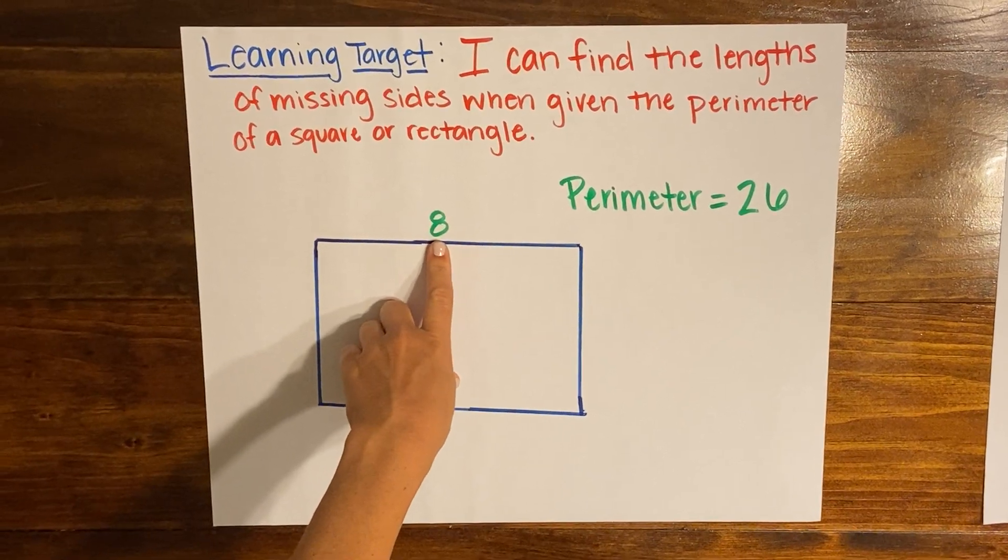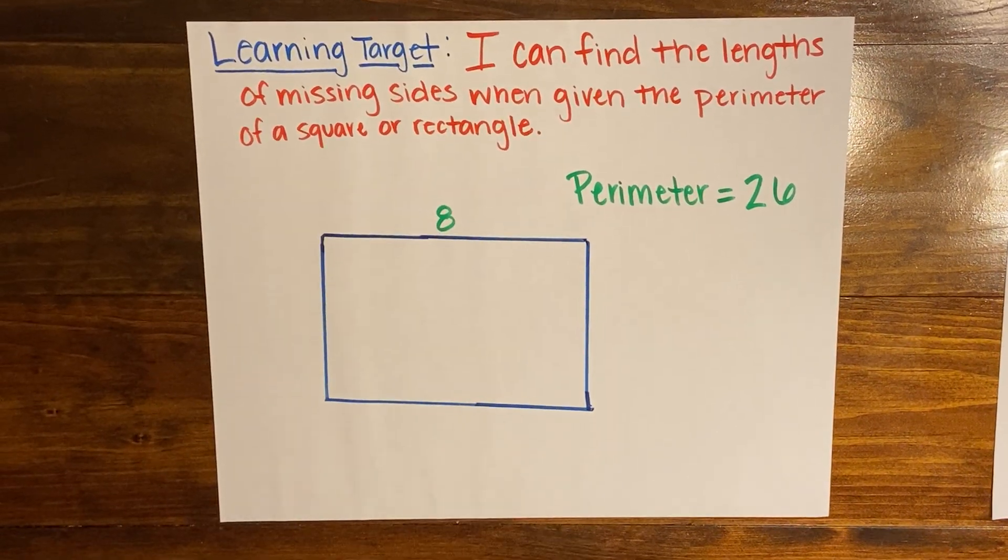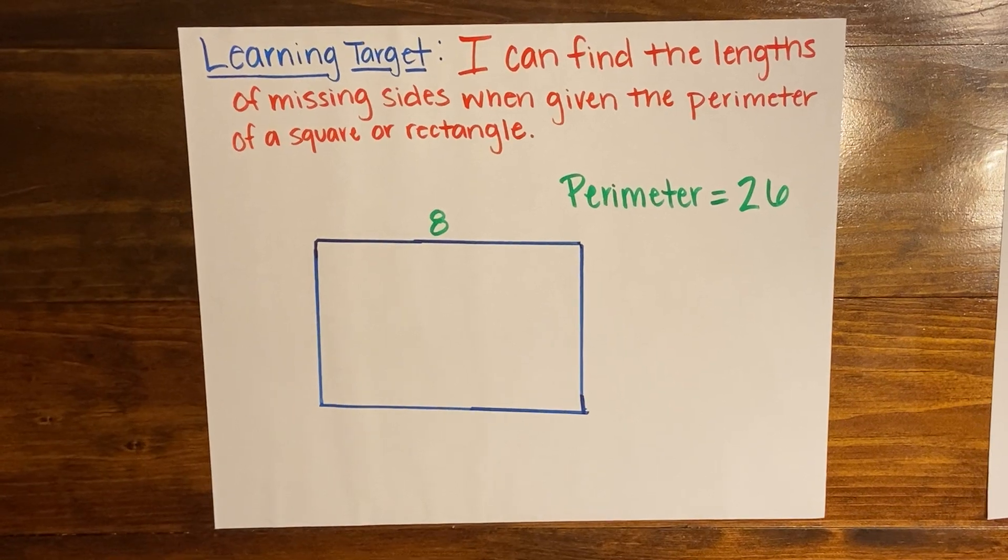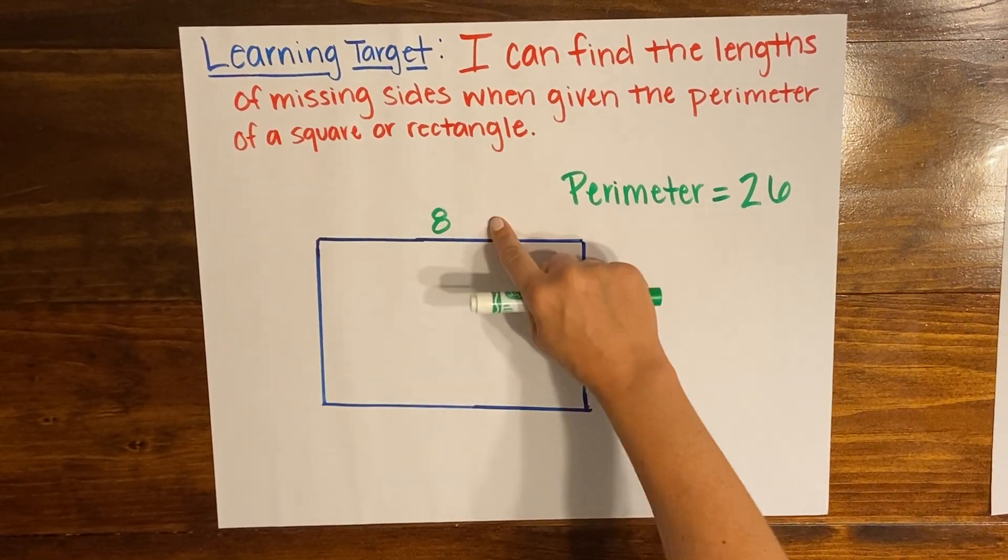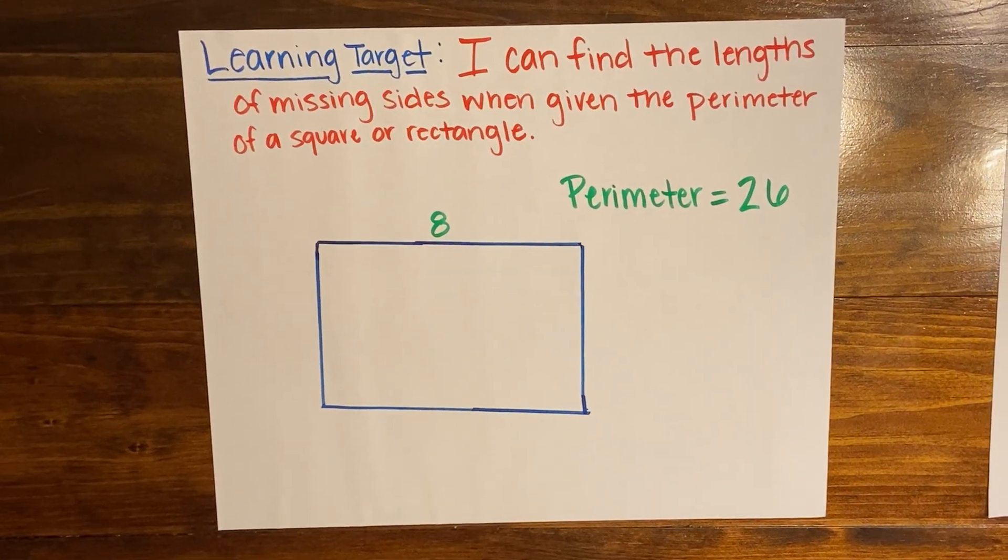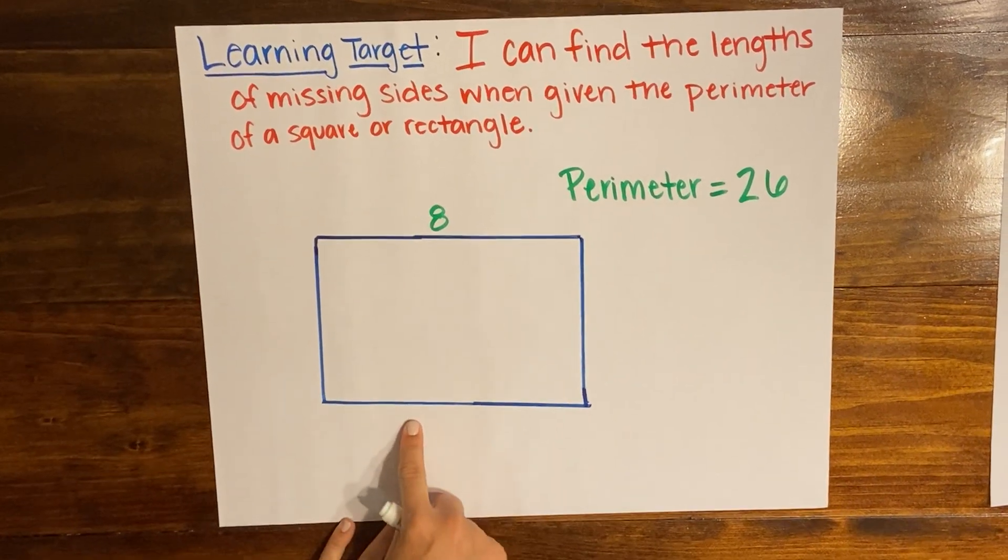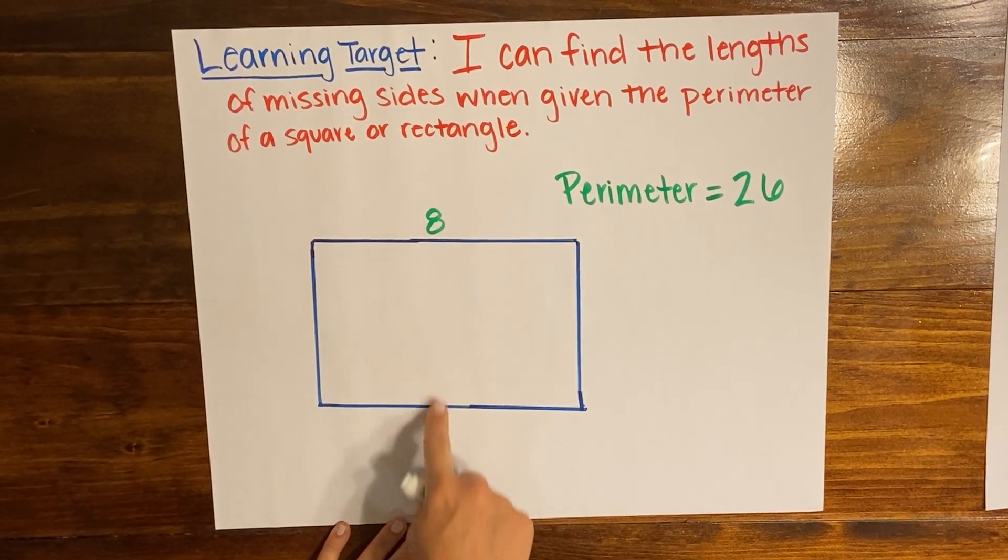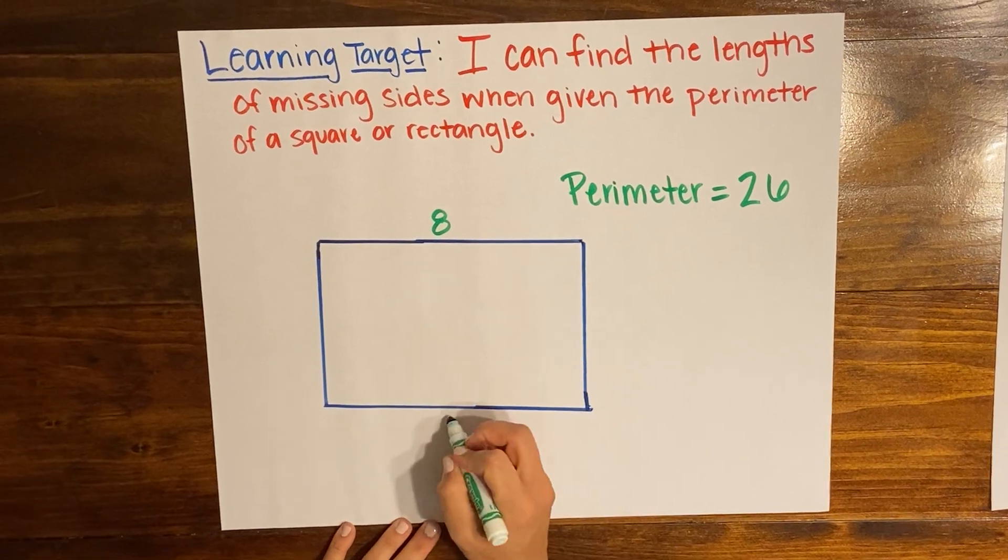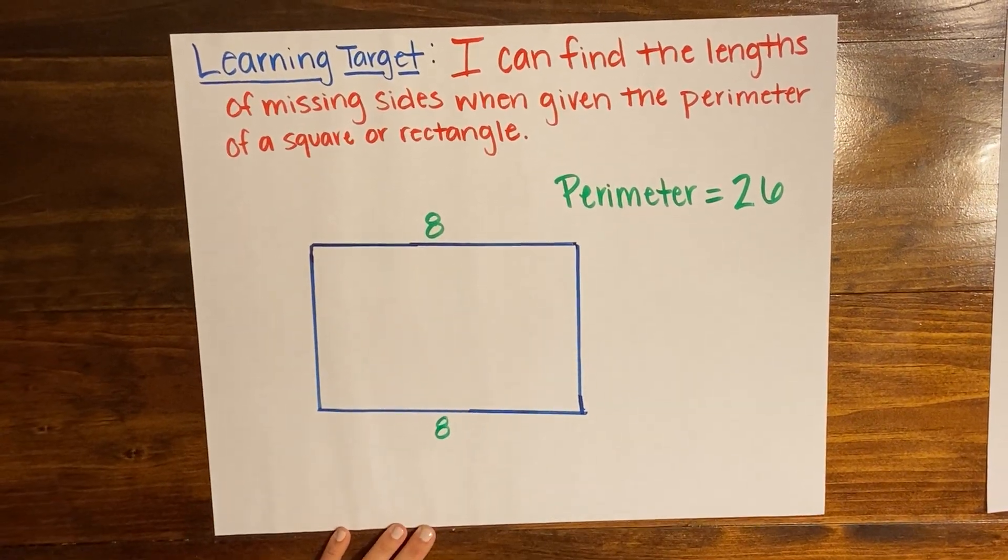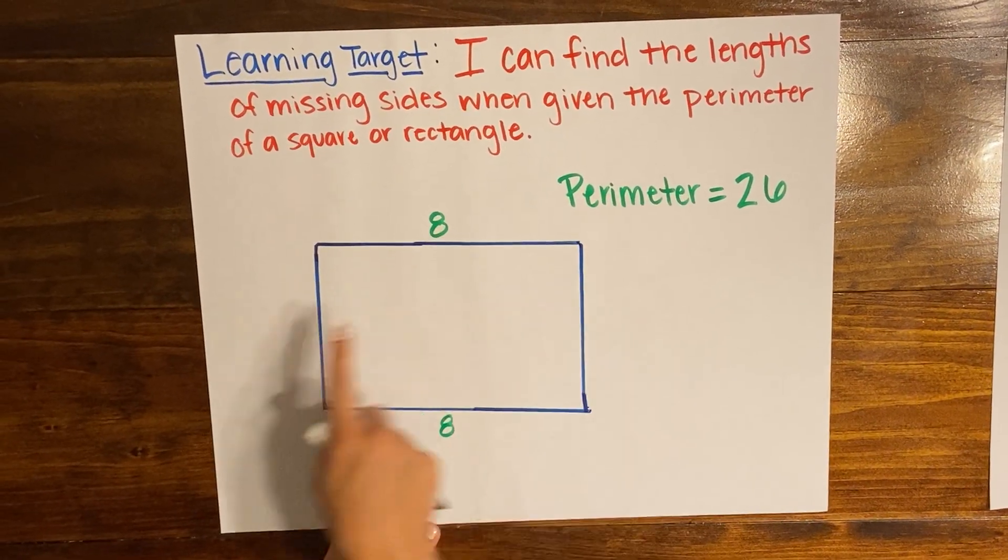Well in this case we're given one side. We know that one side is 8, and because it's a rectangle we know that rectangles have opposite sides that are the same length. So I know already that even though they didn't give me this number here I know it's gonna be 8 because the opposite sides of a rectangle are equal. So now I just need to find these two missing sides.